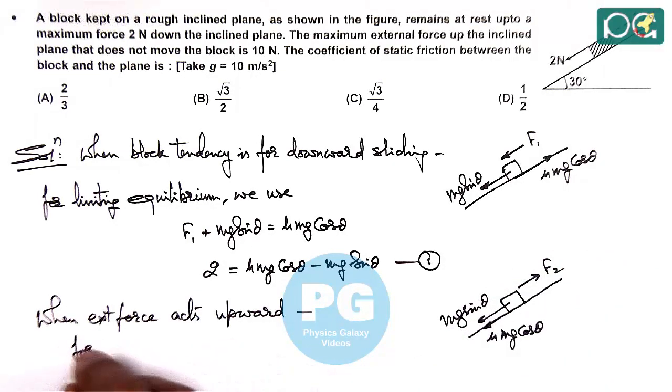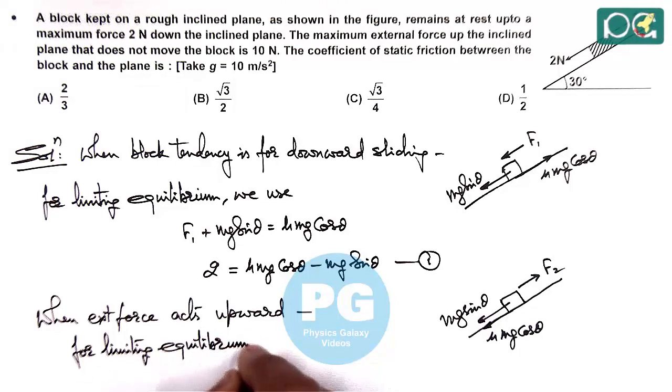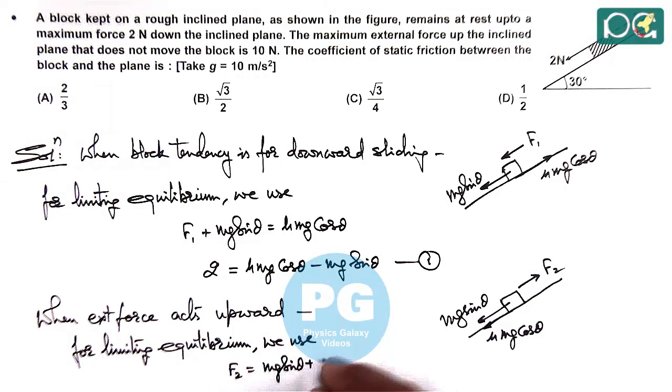For limiting equilibrium in this case, we use F2 = Mg sin θ + μ Mg cos θ. This is equation 2.